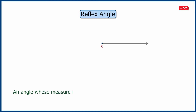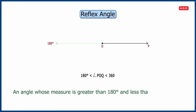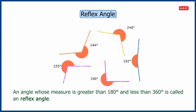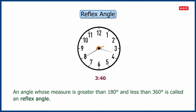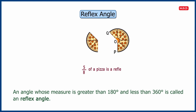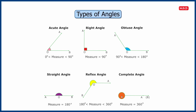And finally, let us now know about reflex angle. An angle whose measure is greater than 180 degrees and less than 360 degrees is called a reflex angle. All the angles shown here are reflex angles. For example, clock showing 40 minutes past three, five by eight of a pizza, etc.